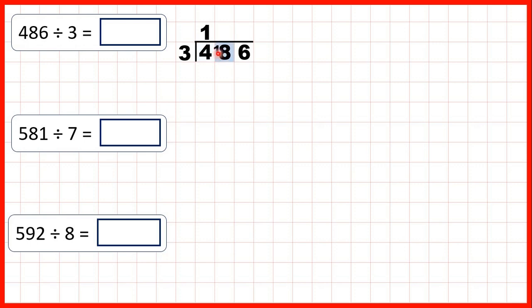So now we have 18 divided by 3. Well 18 is in the 3 times table and because 18 is 6 times 3 we write 6 in our answer line. We don't have a remainder because we were dividing a number that's in the divisor's times table.